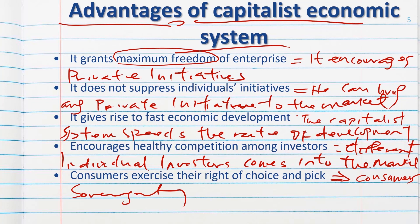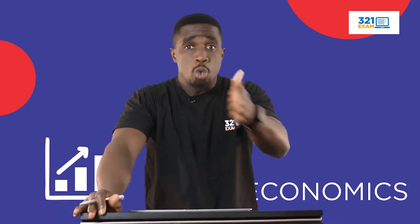Consumer sovereignty means that when you go to the market to buy a commodity — say, tomatoes — and you don't like the product at one seller, you can walk away and go to another seller. The reason you have the ability to move from one seller to another is because of consumer sovereignty, which gives you the right to pick or buy from whoever you decide without interference.